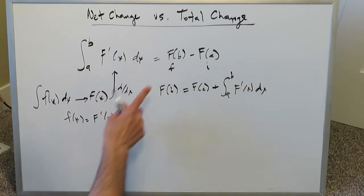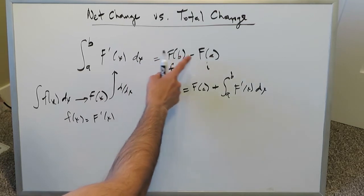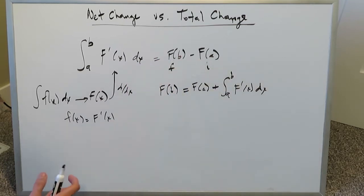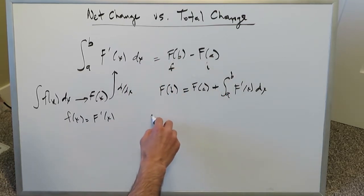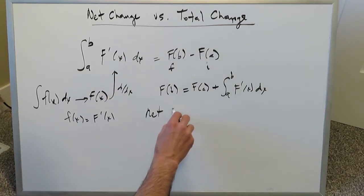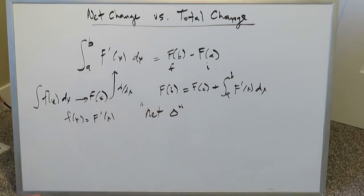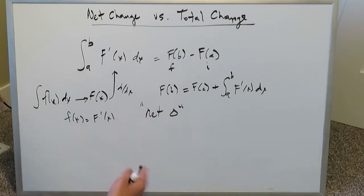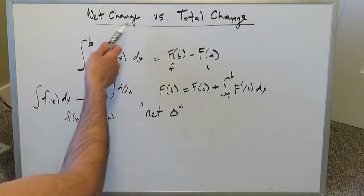All you've done is take that expression and solve for f of b — the final position — where f of a is the initial position. This expression helps you understand the concept of net change. Net change takes into account the differences between the final state and the initial state, including all processes in between.